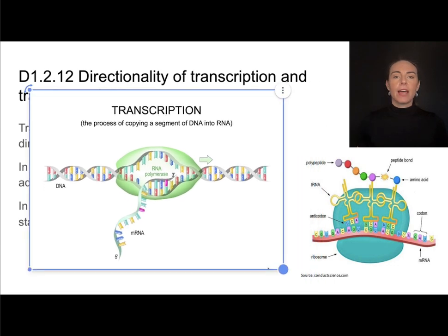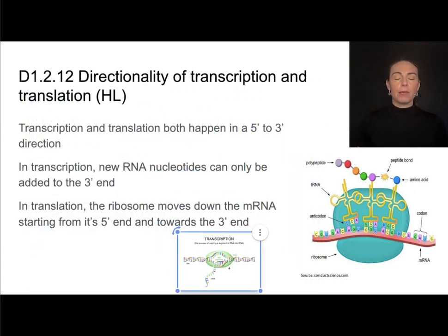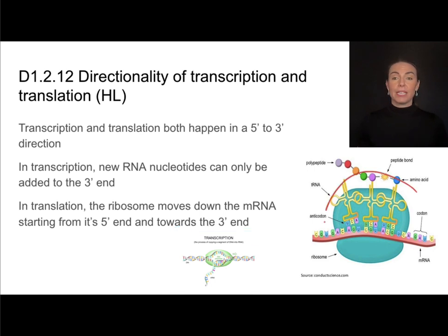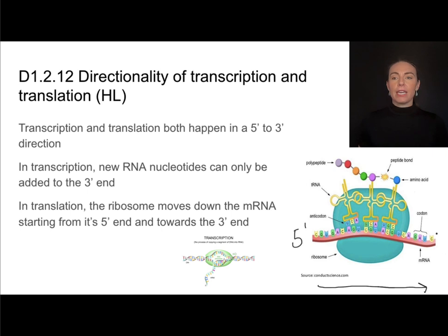That directionality of 5' to 3' also applies to translation. In translation, the ribosome is going to move in this direction from the 5' end of the mRNA to the 3' end of the mRNA.